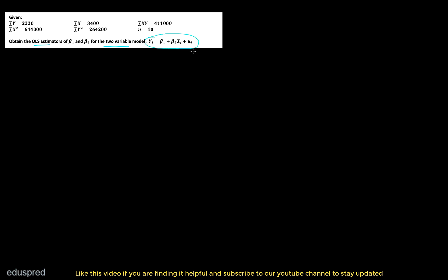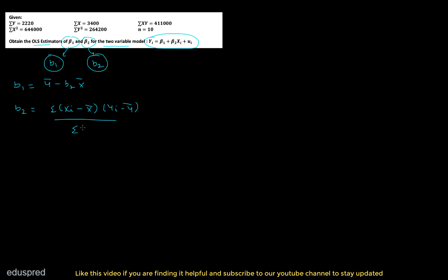We are given some information and we have to obtain the OLS estimators of beta 1 and beta 2 for the two-variable model. I'm going to call the estimator of beta 1 as b1 and the OLS estimator of beta 2 as b2. If you know your formulas well, b1 equals y-bar minus b2 times x-bar, and b2 equals the summation of (xi minus x-bar)(yi minus y-bar) divided by the summation of (xi minus x-bar) squared.